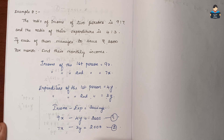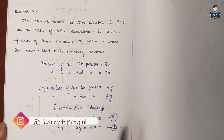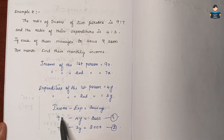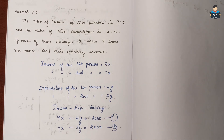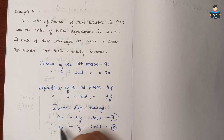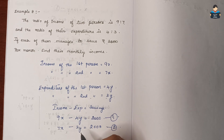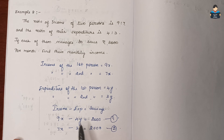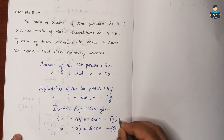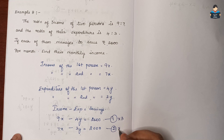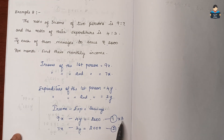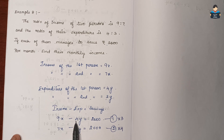Now we apply the elimination method to eliminate the y variable. To eliminate y, we multiply Equation 1 by 3 and Equation 2 by 4, because 4 times 3 equals 12 and 3 times 4 equals 12 — making the y coefficients equal so they cancel. So: 9x minus 4y equals 2,000 multiplied by 3 gives 27x minus 12y equals 6,000. And 7x minus 3y equals 2,000 multiplied by 4 gives 28x minus 12y equals 8,000.